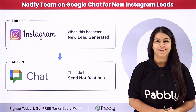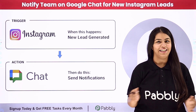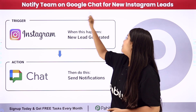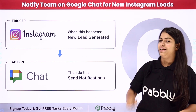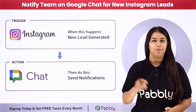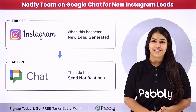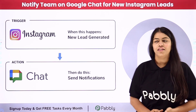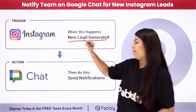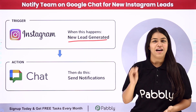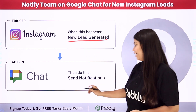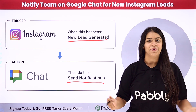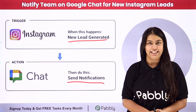Hello everyone, welcome back to Pabbly. The title of today's video is how to notify your team on Google Chat for new Instagram leads. I'm running a business and to promote it I'm using Instagram lead ads. I wish that as soon as a new lead is generated, automatically a notification should be sent to my team on Google Chat to notify them that we have received a new lead.